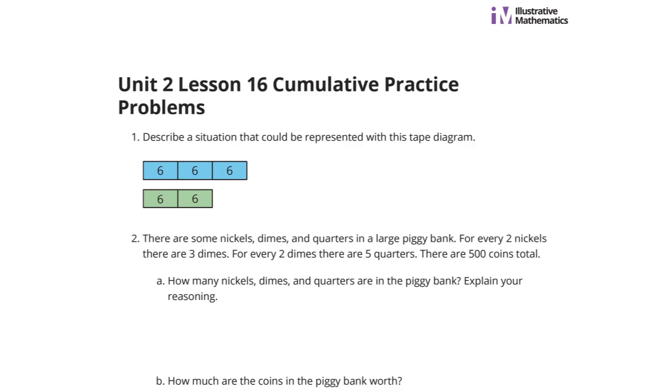In question 1, describe a situation that could be represented with this tape diagram. Well, the first thing that I notice in this diagram is that we have a 3 to 2 ratio. I'm also noticing all these little 6s in here, and that this adds up to 18 and 12, which is 30. So our question needs to involve something with the 3 to 2, and something with our total of 30.